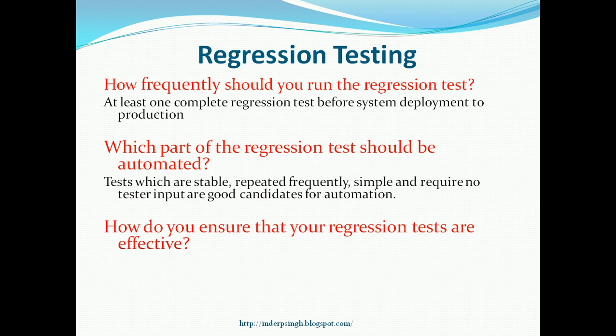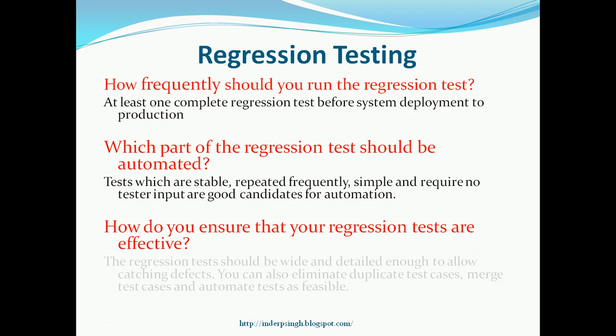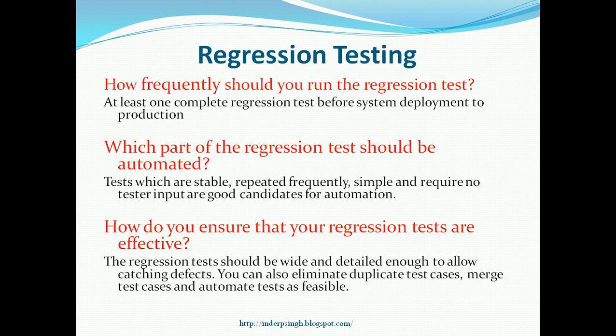How do you ensure that your regression tests are effective? Time is always key in testing. The regression test should be wide enough to allow catching defects — if it is a very narrow test covering only a small part of the system, it may not surface regression defects. The regression test should also be detailed enough; if it is just a high-level or superficial test, regression issues may not be caught. In your entire regression test suite, you can eliminate duplicate test cases, merge test cases which have common parts, and automate tests as far as possible.